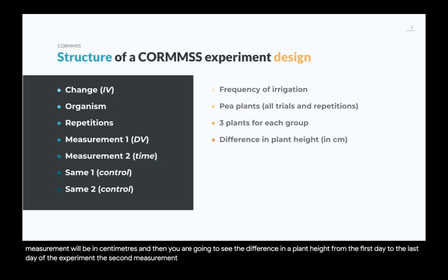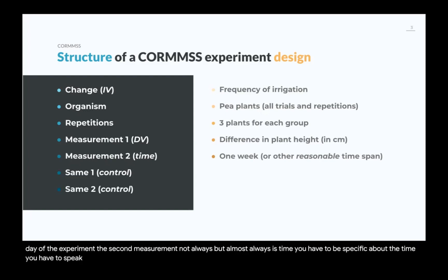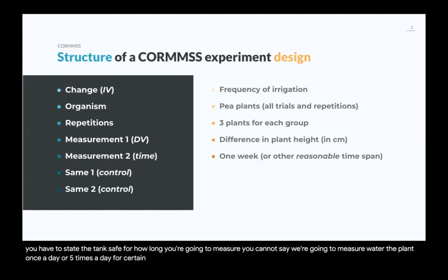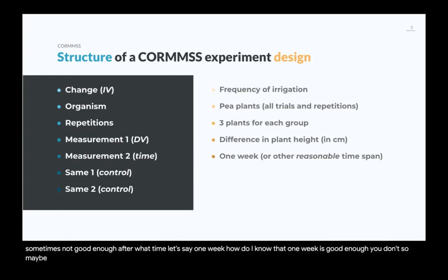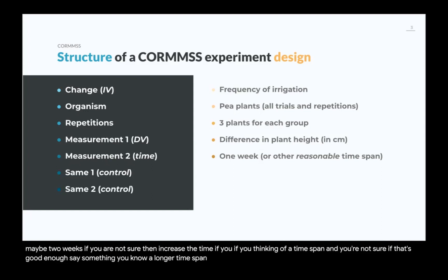The second measurement — almost always — is time. You have to be specific about the time and state how long you're going to measure for. You cannot just say 'for a certain period of time' — you have to say, for example, one week or two weeks. If you're unsure whether your chosen time span is long enough, increase it to be safe. But you must be specific and state the time.